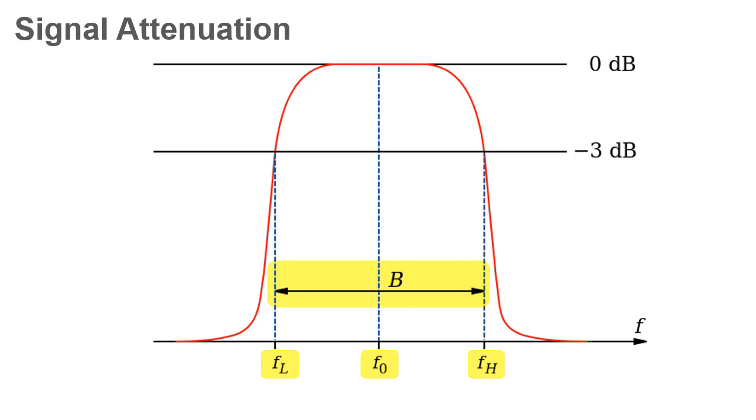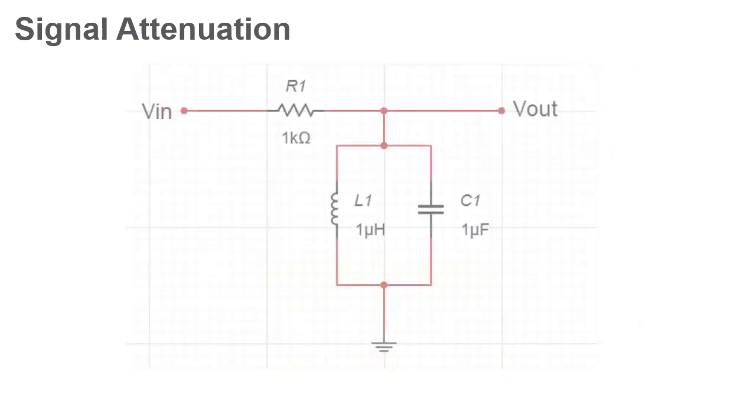The difference between FL and FH is B, known as the bandwidth. This diagram is an example of a simple RLC band pass filter.